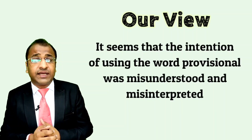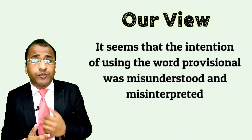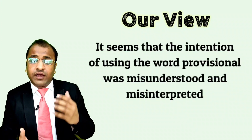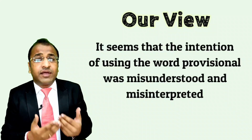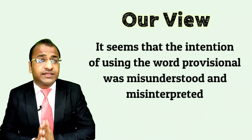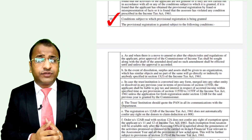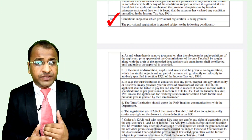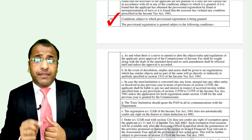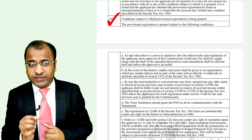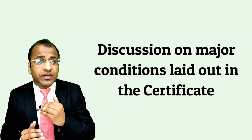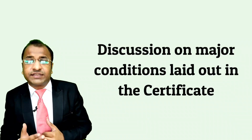We are also of the opinion that at the time of the second renewal, since documents might be called for and proper verification might be conducted before renewing the registration again for a period of 5 years, the term 'permanent registration' might be used at that time while passing the order. But nothing can be outrightly said regarding this as of now. Coming to the last part of the order, certain conditions have been laid out, subject to which such provisional registration is being granted, and failure to comply with the same might lead to cancellation or suspension of such registration. Out of the 18 conditions, the major ones are being discussed in this video.